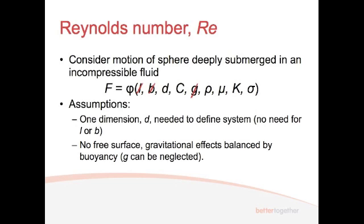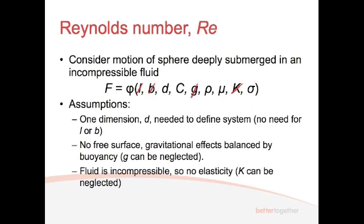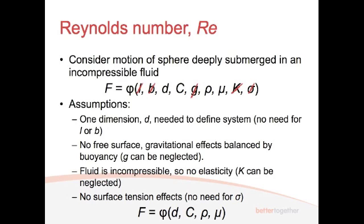There's no free surface, and so any gravitational effects are balanced by the buoyancy, yeah? We all know that when you put something that weighs a kilogram in the fluid, that's being displaced by a kilogram of fluid, which obviously moves upwards, and so the gravitational effects are balanced. So G, we can neglect G. There's no free surface—oh, sorry, fluid is incompressible, and so there's no elasticity, so K can be neglected. And as I said, there's no free surface, so we can neglect sigma. And so we end up with an equation that looks a bit like this. The force is a function of the diameter, the velocity, the density, and the viscosity.